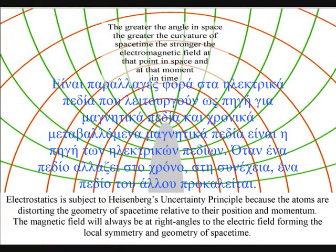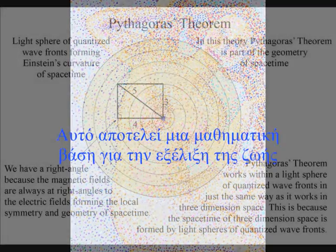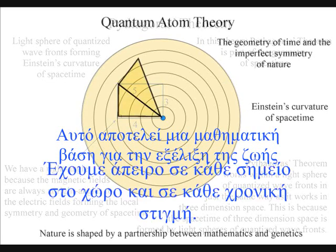This will be relative to the position and momentum of the objects creating the time variation, the atoms themselves. The magnetic fields are always at right angles to the electric fields, forming the local spacetime symmetry and geometry that will spiral out, creating the visual and mathematical patterns of our universe.